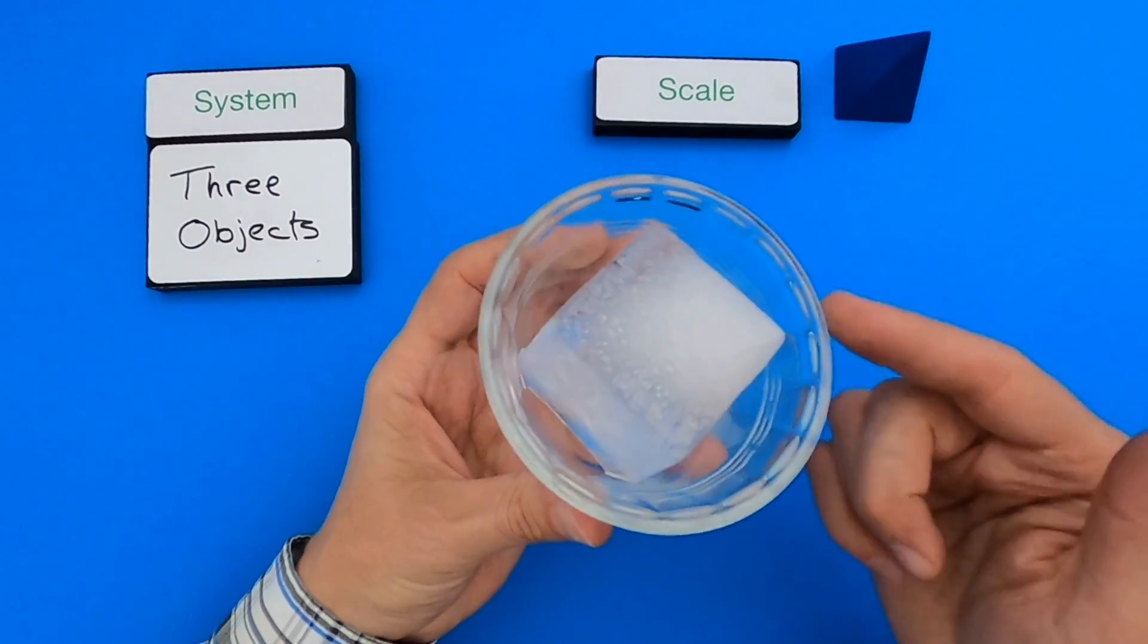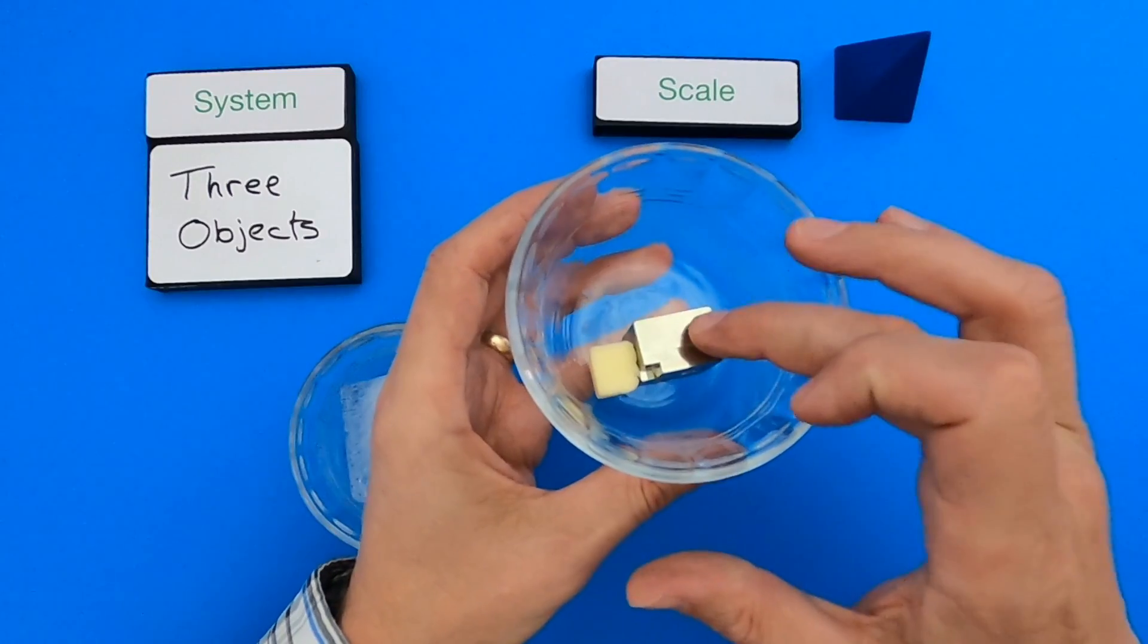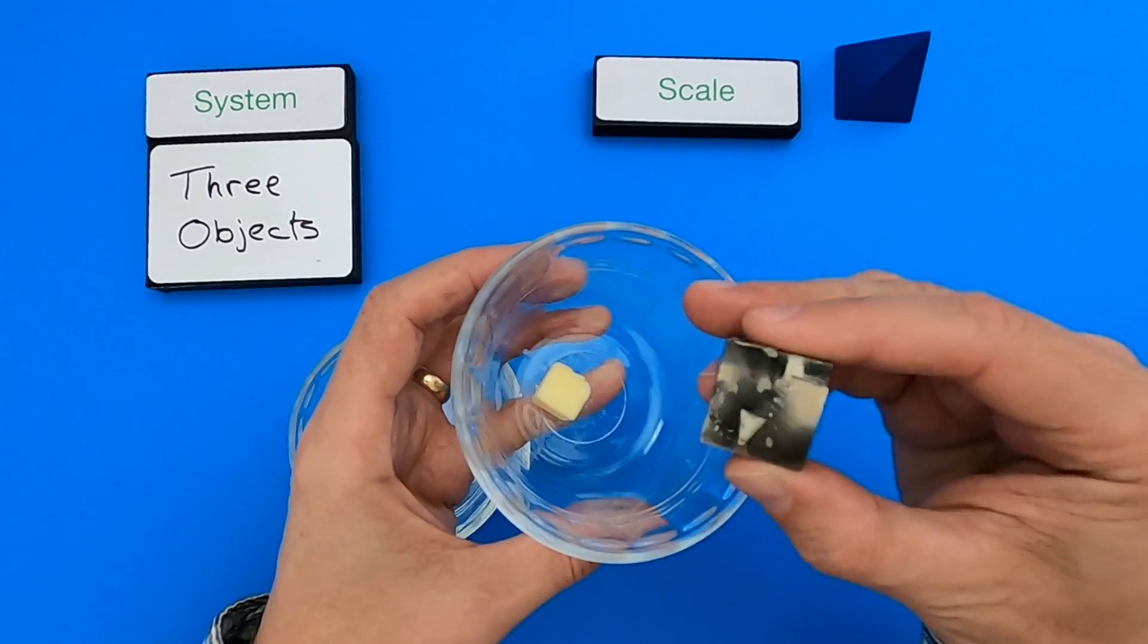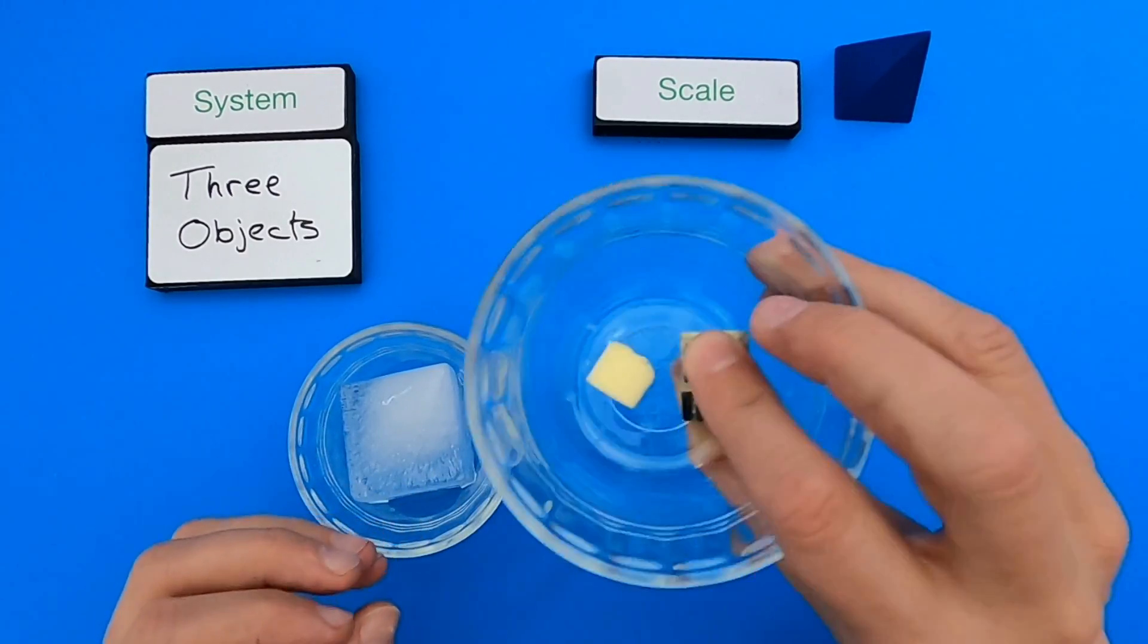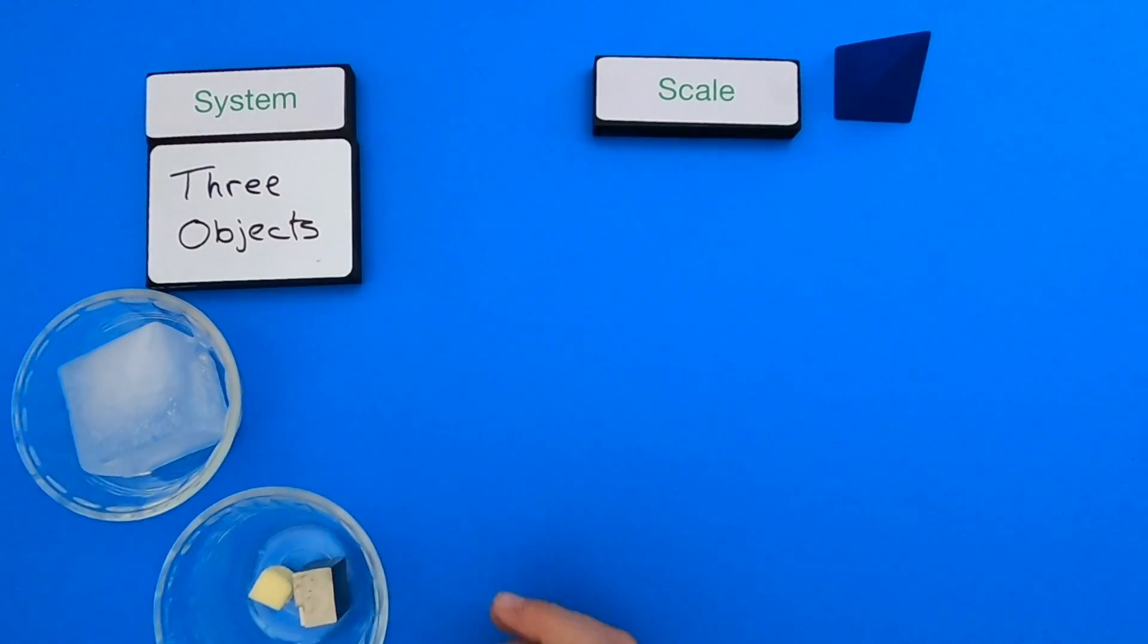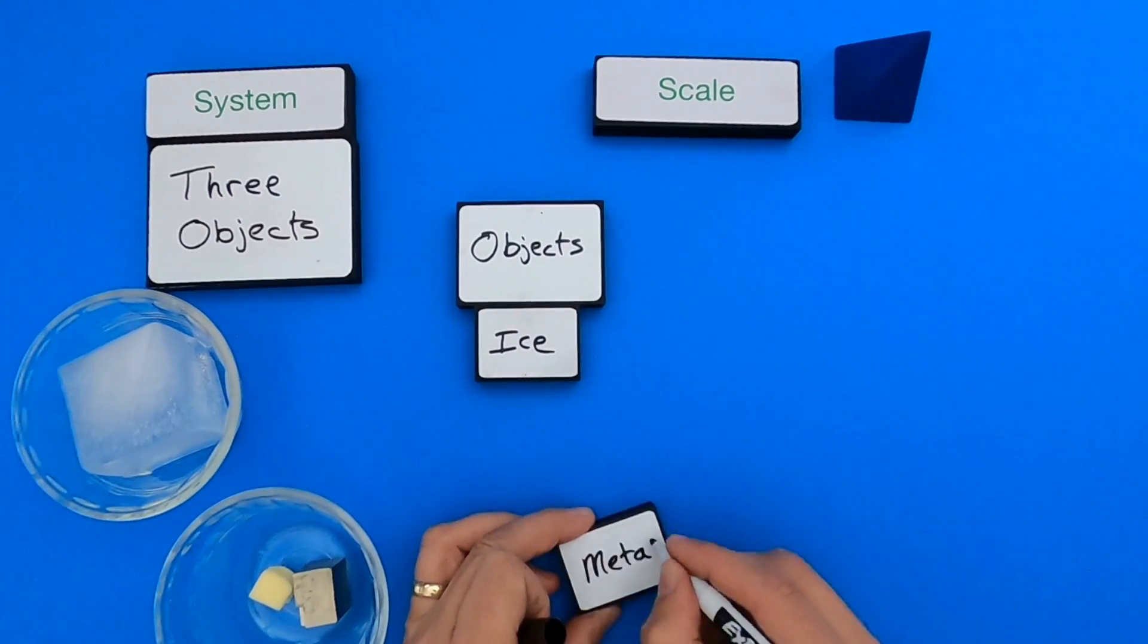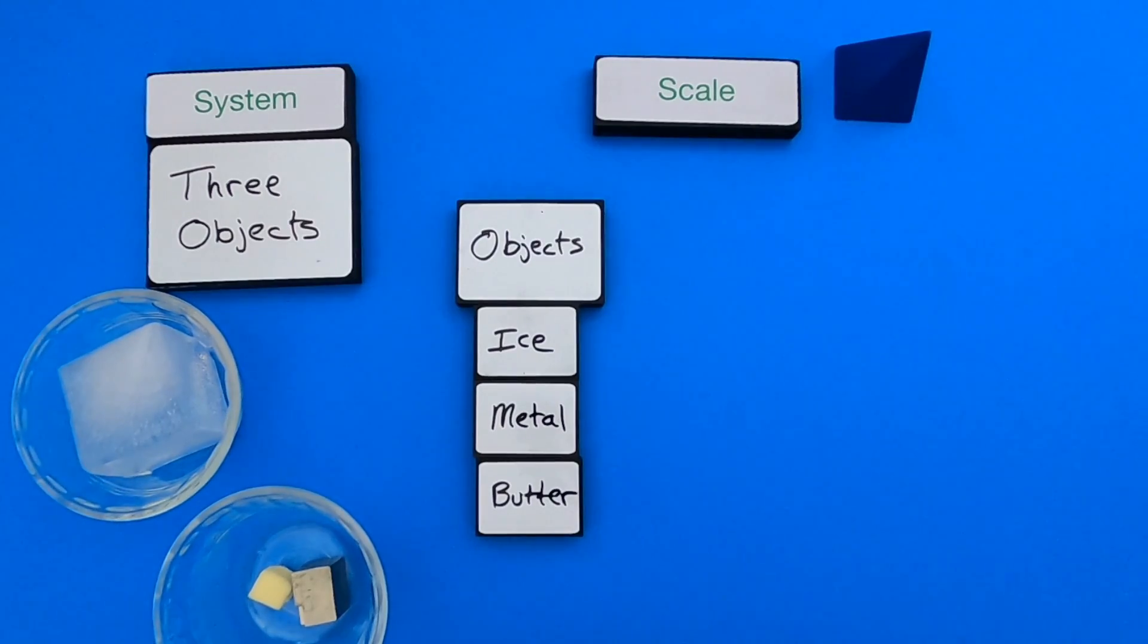The ice is relatively large. It's also really cold. I can feel that. If we look at the metal, it's smaller than the ice, but larger than the butter. And there's some other properties. You can see that the metal has these different sides on it. And we can see that the butter is actually starting to stick to the bottom of the bowl. So as we investigate this, we want to make sure that we describe the objects that we're actually investigating. So the objects I'm going to investigate are the ice, the metal, and the butter.